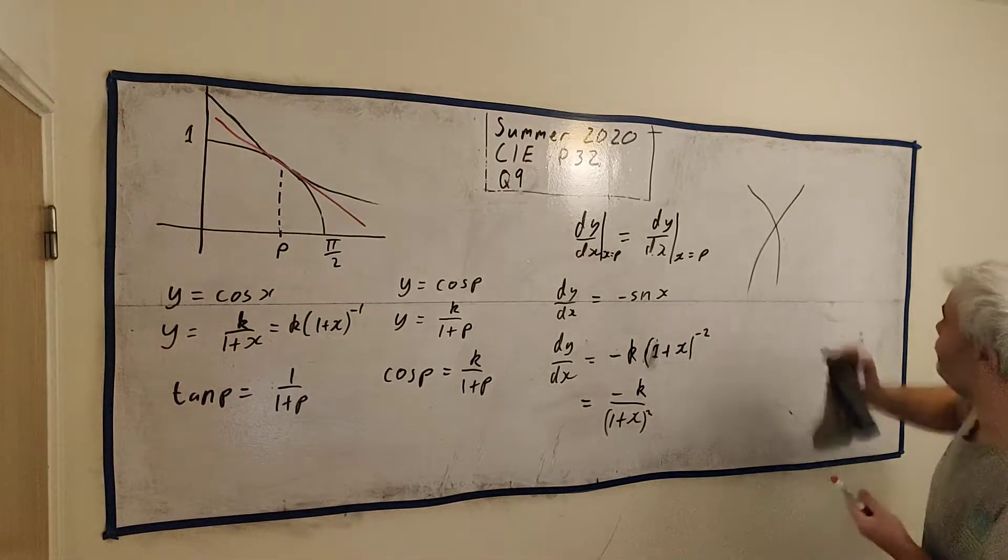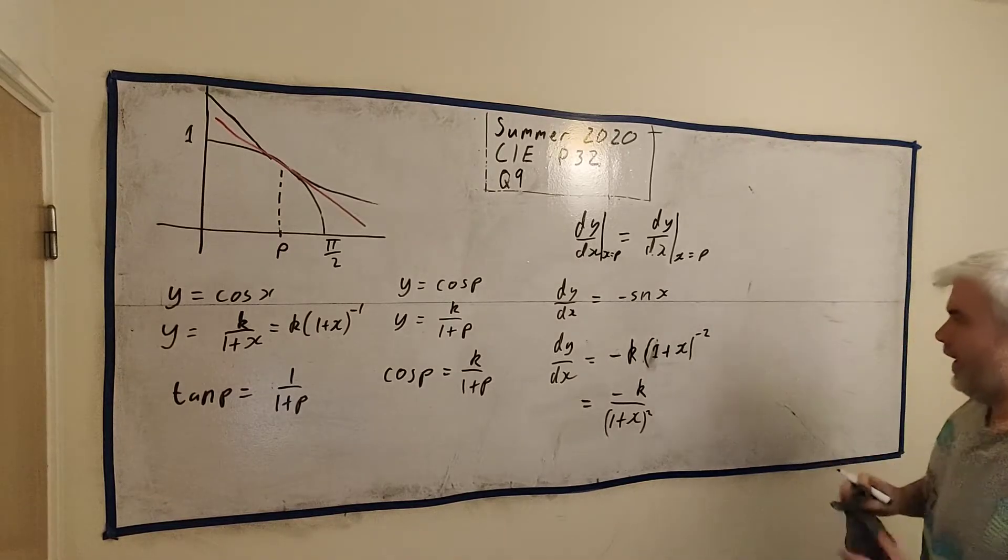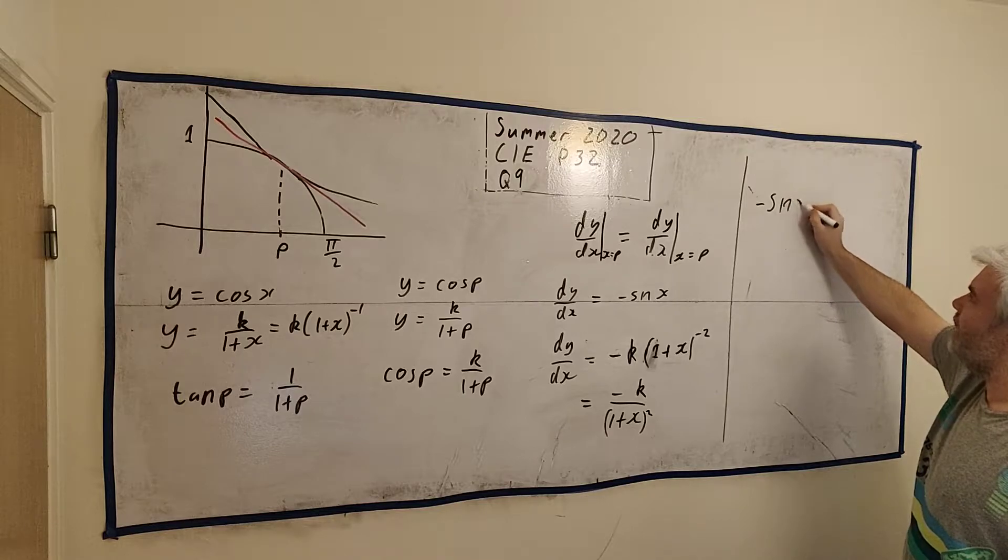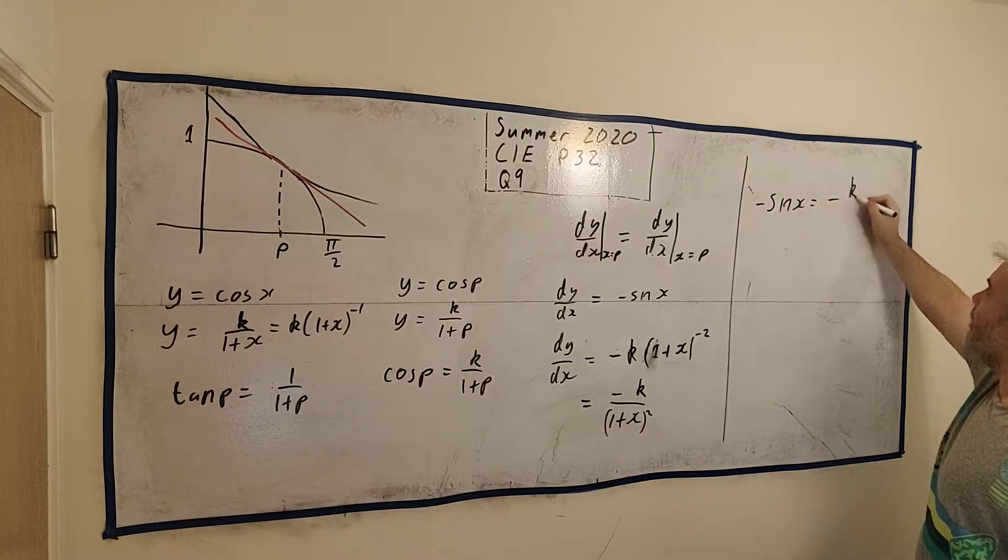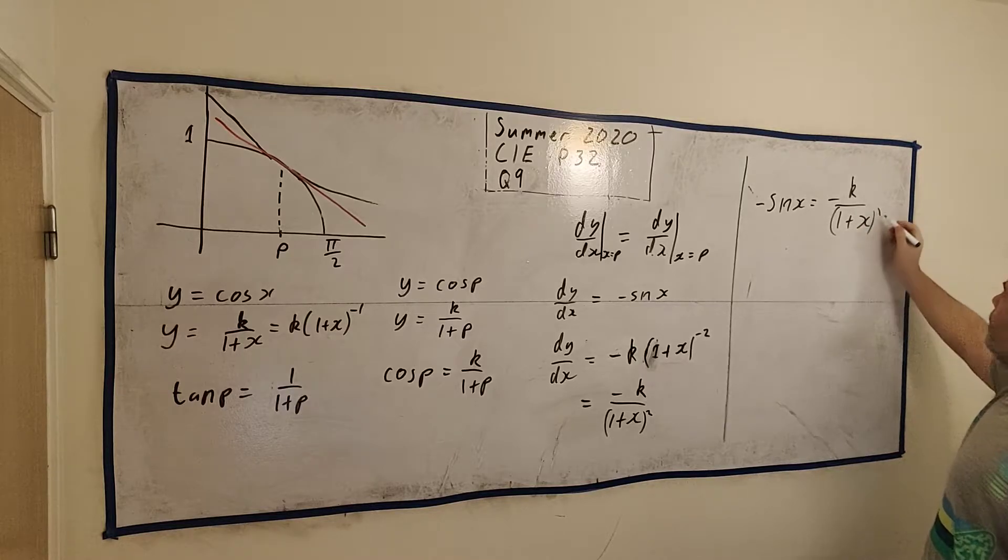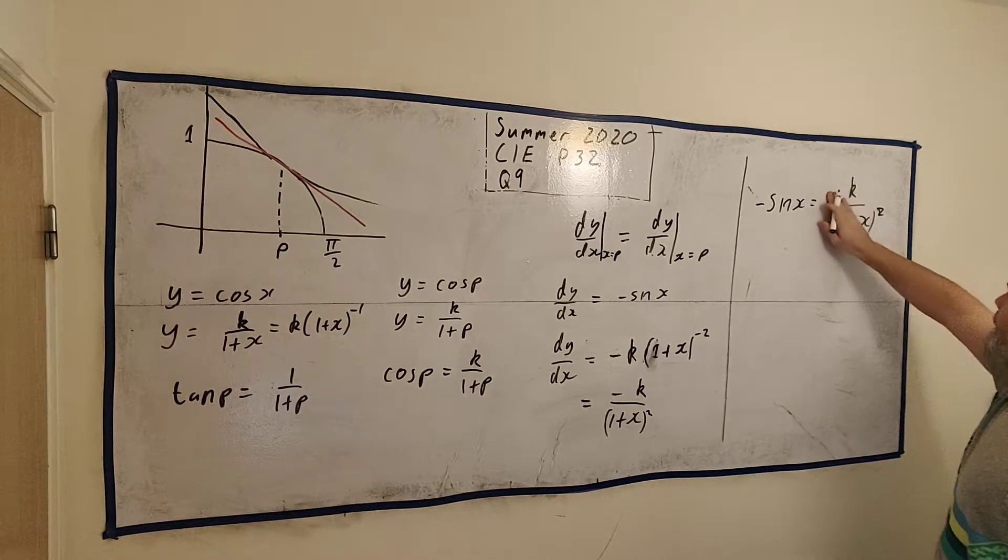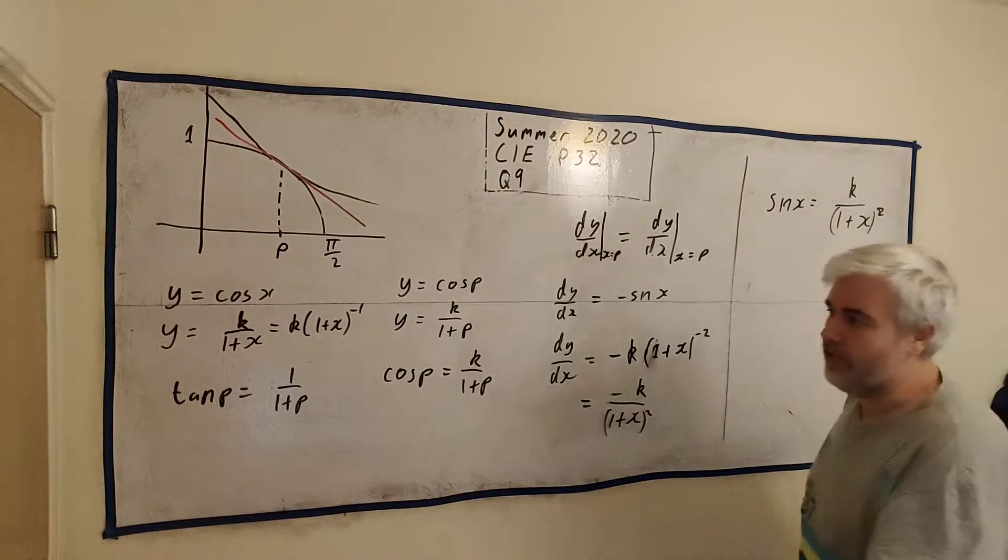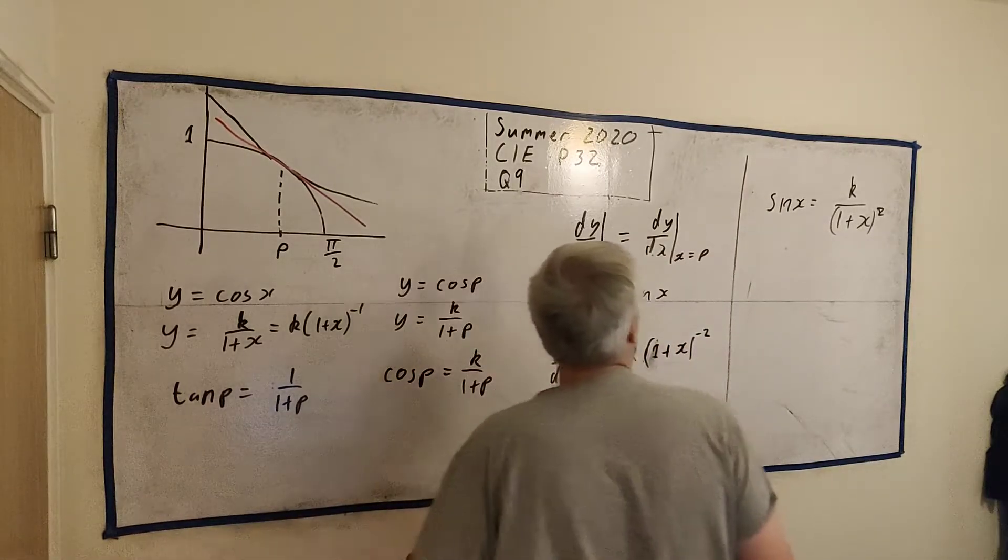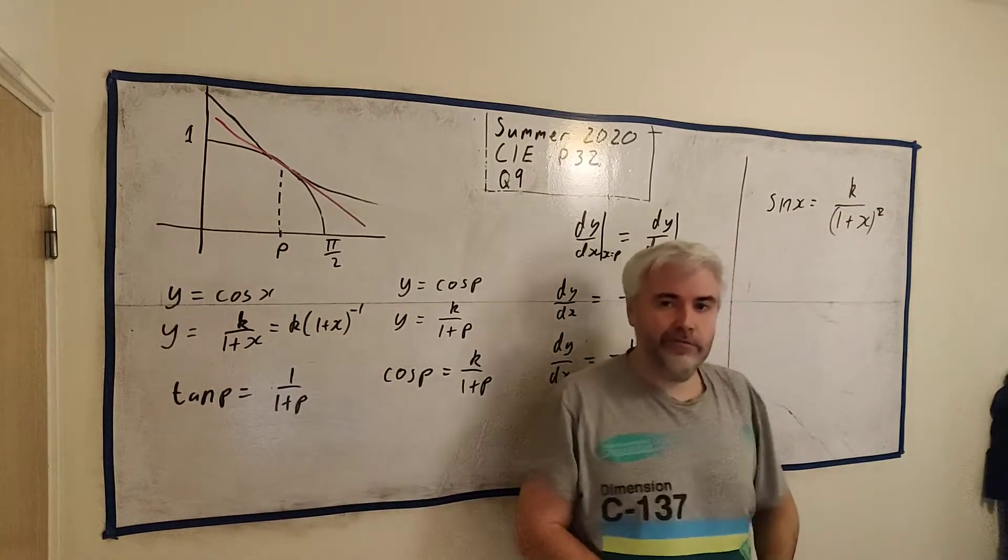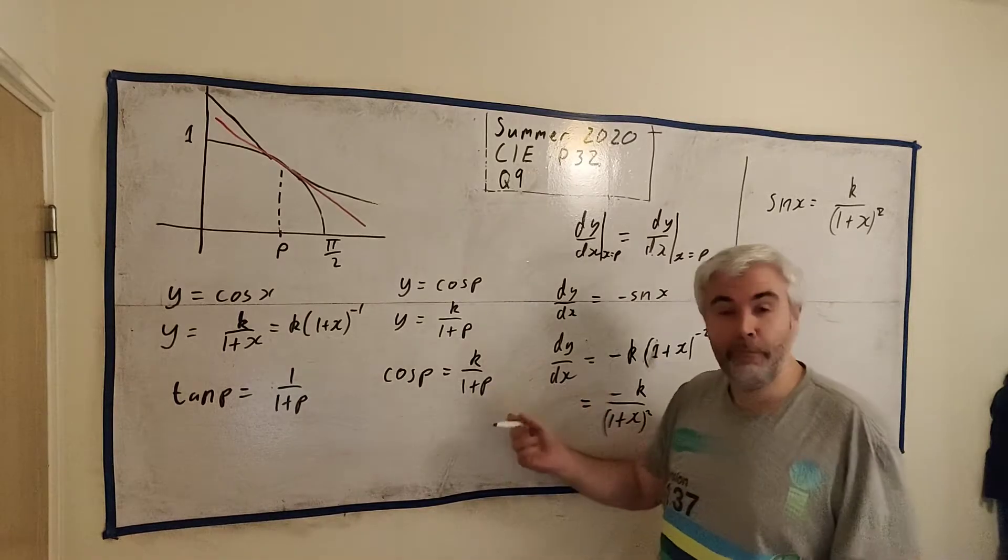We have minus sine x is equal to minus k over 1 plus x squared. We can get rid of the minuses. Minuses are gone. This still doesn't give us tangent p. This is a similar problem. How do I turn sine into tangent? Where does the k go? It's a similar problem. But remember, we still have this one still true. This is still true that this point is equal to this point.